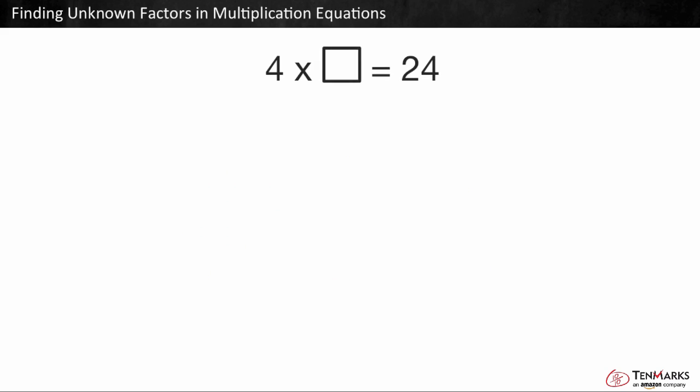We can use the same method to find the missing factor when it's the second factor missing instead of the first. Another way you can find the missing factor in a multiplication equation is using repeated addition. Let's take a look at this multiplication equation. 4 times something equals 24. We need to find the missing factor.